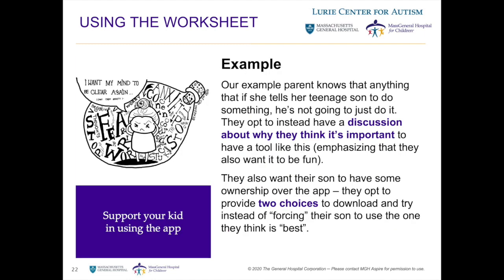For our example parent, they think about how they'll recommend using the app to their teen. They know that things presented as expectations or responsibilities can feel unfair to their son or lead to pushback. They opt instead to have a discussion first about why they're looking for an app and try to get buy-in to try something. They know their teen doesn't want to feel stressed all the time and think they could be motivated to address that under the right circumstances. They decide that dictating which app will be used will be resisted — instead, they give their son some choice by making two recommendations and keeping the conversation open. They also decide to wait for the right time and talk with their son's therapist about how to bring it up.